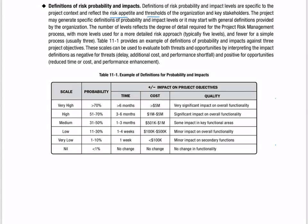As a project manager, you should know what is the risk probability and the impact of that risk. When this risk happens, what is the impact that is going to occur? How much can you bear? What is the risk appetite your organization has? And what are the thresholds set by your organization, beyond which you are not going to accept the risk?